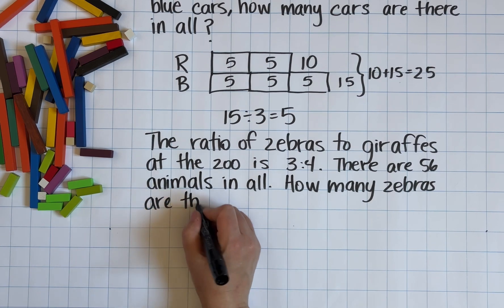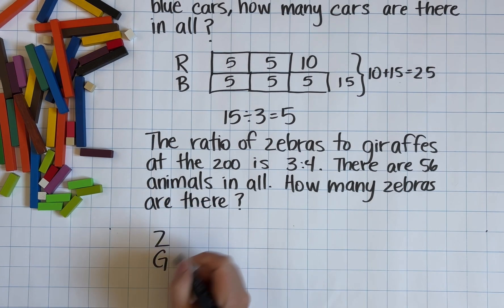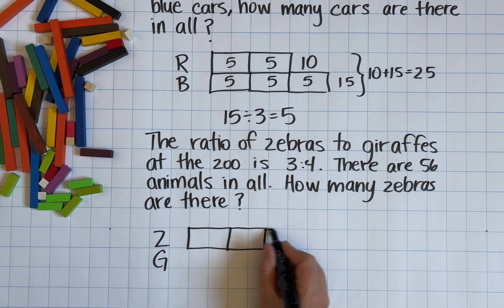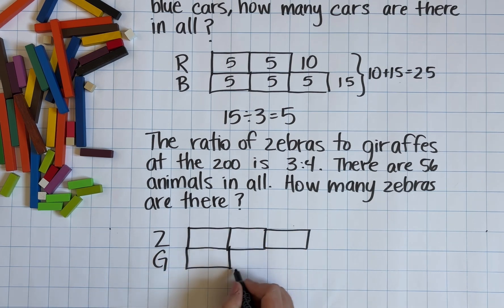Okay, let's take a look at another problem. This one's a little bit different. This time we have a ratio of zebras to giraffes, which is 3:4, and we know that there's 56 animals in all. This time we know the total.